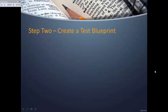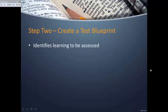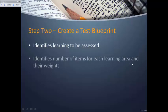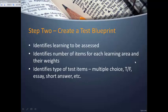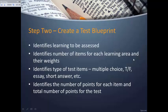A test blueprint helps ensure your test covers the content you want. The blueprint identifies the learning you want to assess, assigns the number of items for each area, and assigns different weights to those areas. You can then identify the type of test item to use for different learning areas—multiple choice, true/false, essay, short answer, or other constructed response formats—and determine the total number of points for the test.